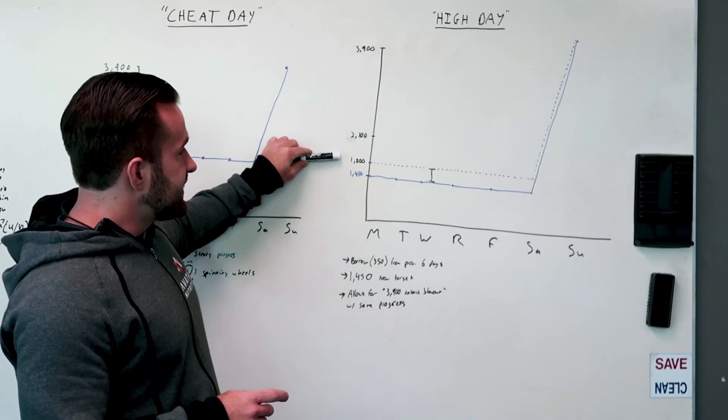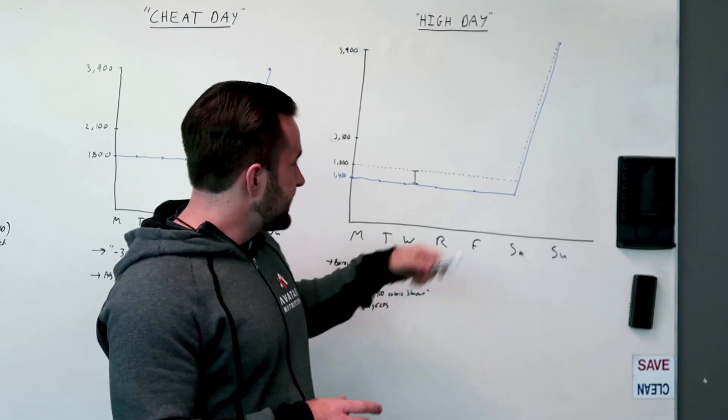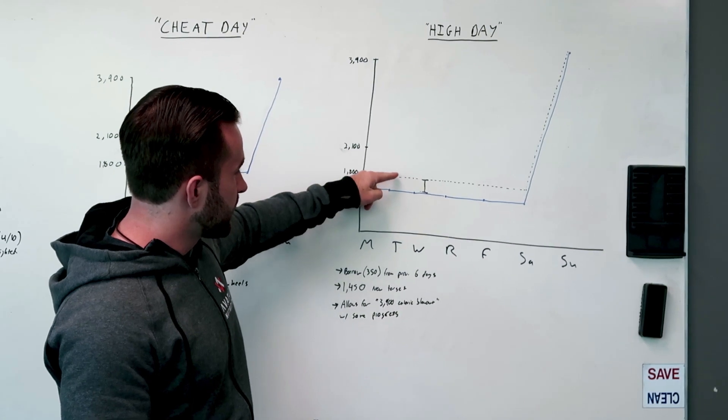So instead of 1,800, your six-day intake is going to be 1,450. As you can see from this line, there's a little difference between where you were before and where you are.